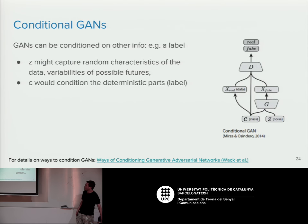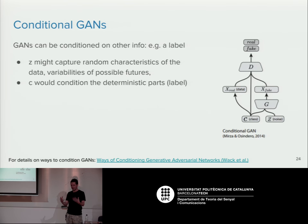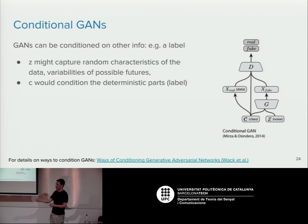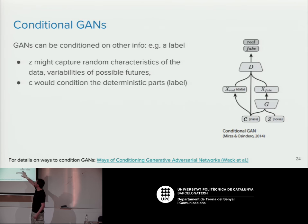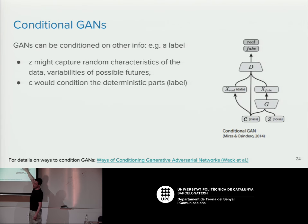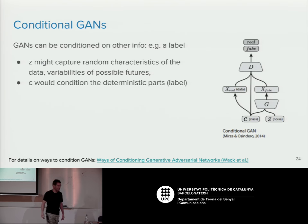The final major idea is the conditional GAN, where the generator is conditioned on some additional information — like a class label. You give the generator a class such as 'bird' or 'truck' along with random noise, and it generates samples from that category. The discriminator sees both generated and real samples and tries to distinguish them, sometimes also needing access to the class label.